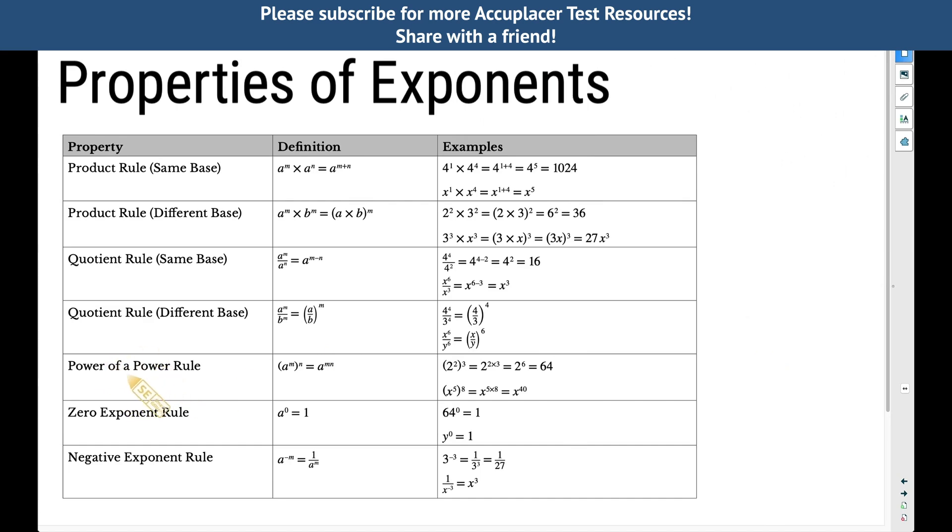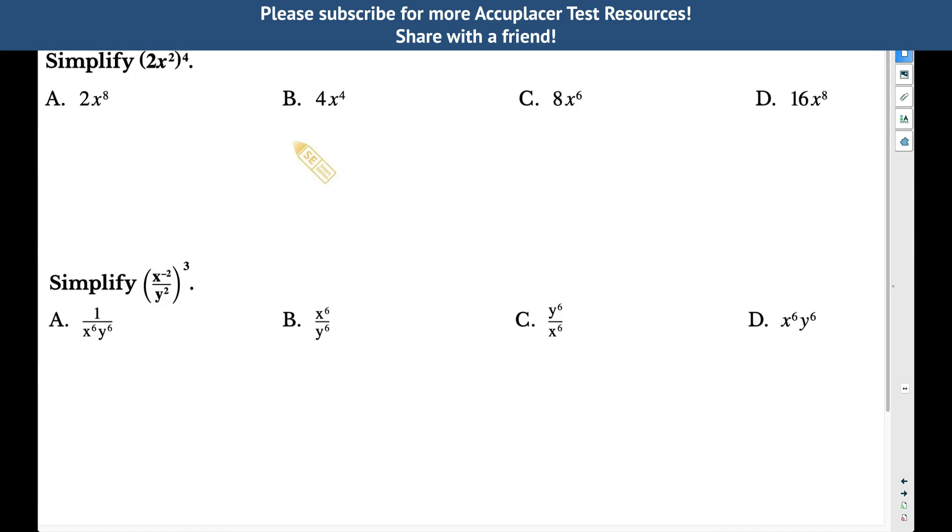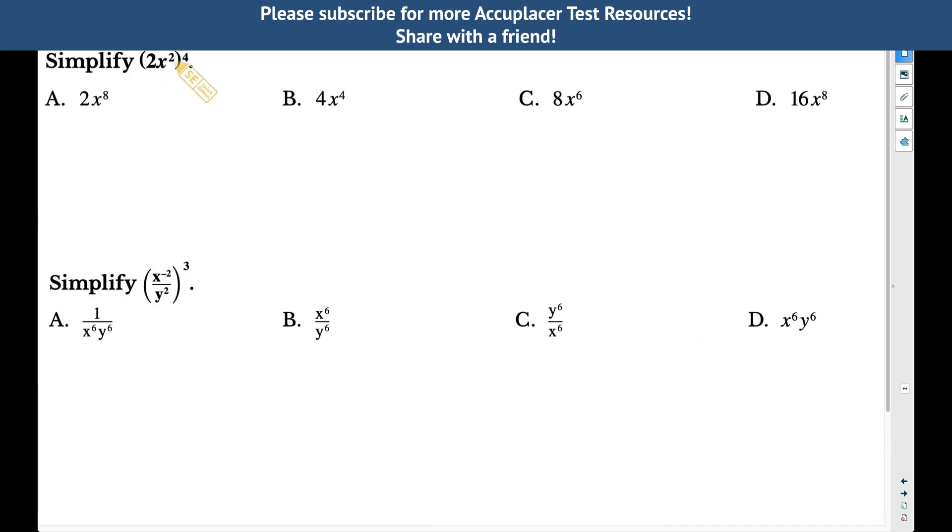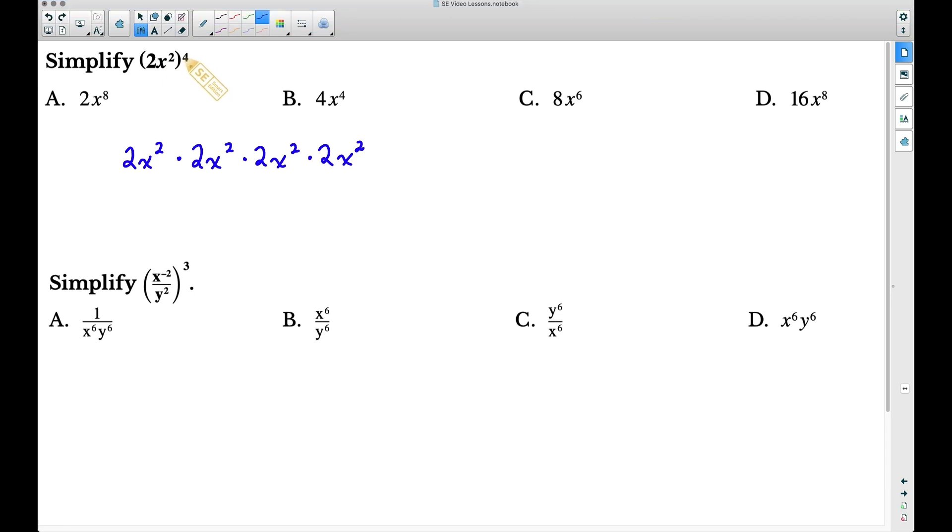Let's actually take this rule, power of a power, and apply it to this example. But before we do that, I'm going to expand this to show you the long way, which will also show you the product rule. So 2x squared and all of this raised to the fourth, here is the expanded form. 2x squared raised to the fourth means 2x squared times 2x squared times 2x squared times another 2x squared. That's what 2x squared, all of that raised to the fourth. We're multiplying it times itself four times.